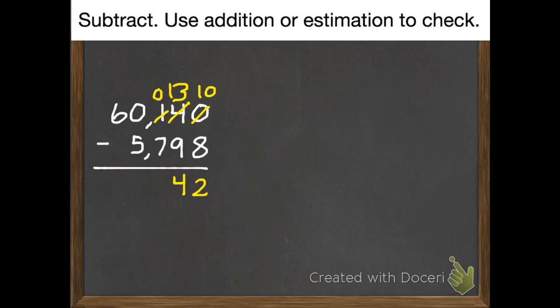Then our hundreds. 0 subtract 7. I need to borrow again. But we don't have any thousands. So we're going to borrow from our ten thousands. A ten thousand turns into ten thousands. We need to borrow a thousand. So that becomes a 9. And that thousand becomes ten hundreds.